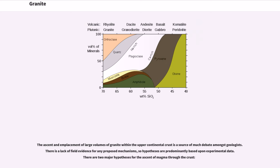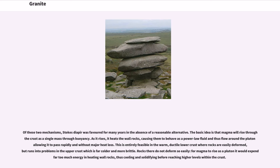The ascent and emplacement of large volumes of granite within the upper continental crust is a source of much debate amongst geologists. There is a lack of field evidence for any proposed mechanisms, so hypotheses are predominantly based upon experimental data. There are two major hypotheses for the ascent of magma through the crust. Of these two mechanisms, Stokes' diapir was favored for many years in the absence of a reasonable alternative. The basic idea is that magma will rise through the crust as a single mass through buoyancy. As it rises, it heats the wall rocks, causing them to behave as a power law fluid and thus flow around the pluton allowing it to pass rapidly and without major heat loss. This is entirely feasible in the warm, ductile lower crust where rocks are easily deformed, but runs into problems in the upper crust which is far colder and more brittle. Rocks there do not deform so easily, for magma to rise as a pluton it would expend far too much energy in heating wall rocks, thus cooling and solidifying before reaching higher levels within the crust.